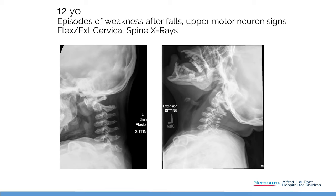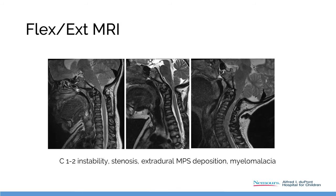Here was a six-year-old girl — every time she'd fall, she couldn't move and someone had to pick her up, then she slowly regained function. She had been transplanted many years ago. Look at the instability at C1-2, her flexion awake MRI showing the spinal cord being crushed in flexion and extension, and significant myelomalacia with keratan sulfate accumulation behind the dens. She needed decompression and fusion.